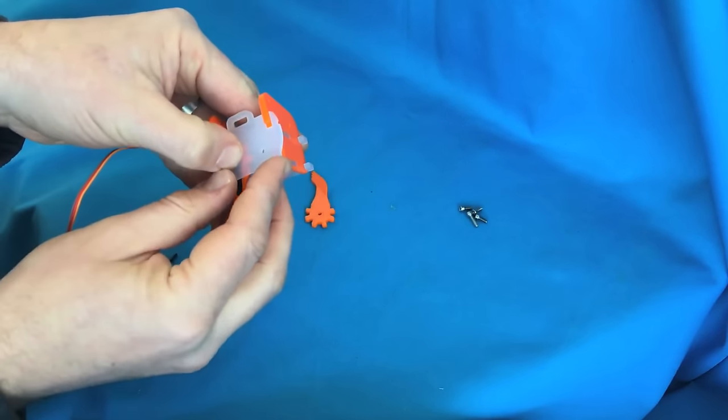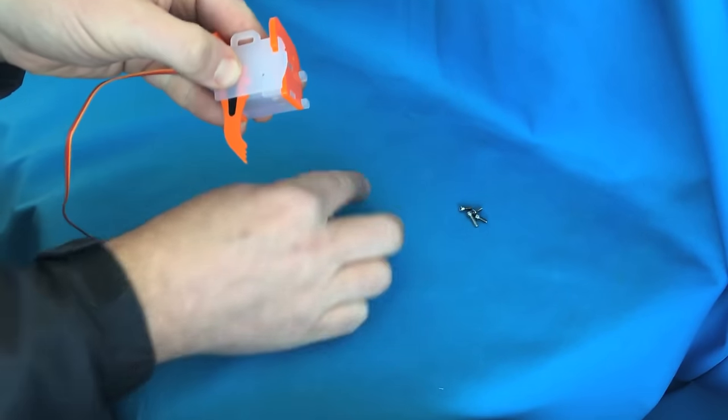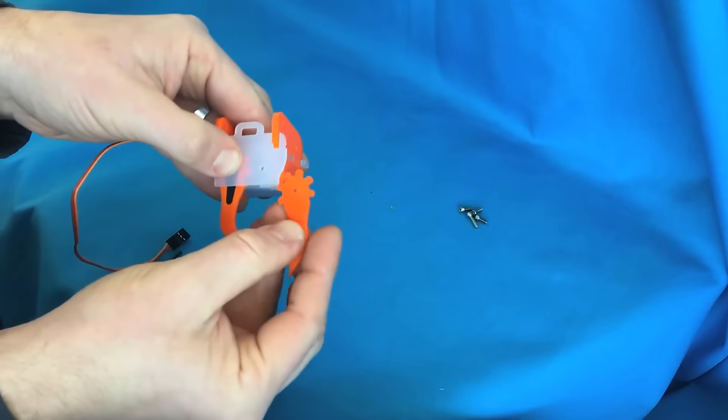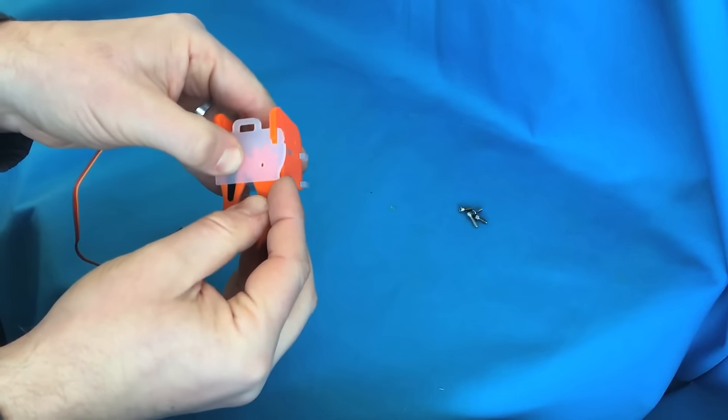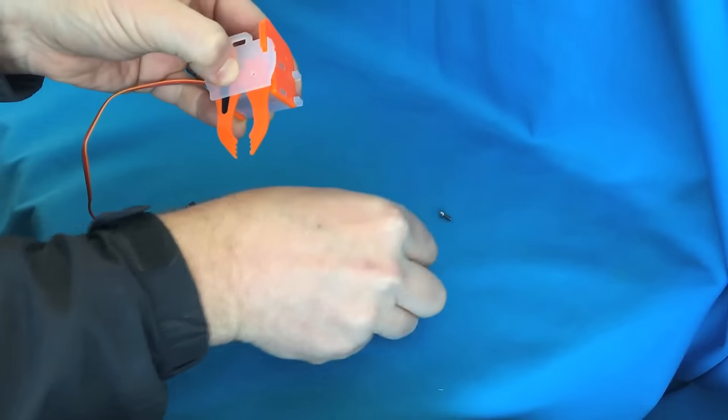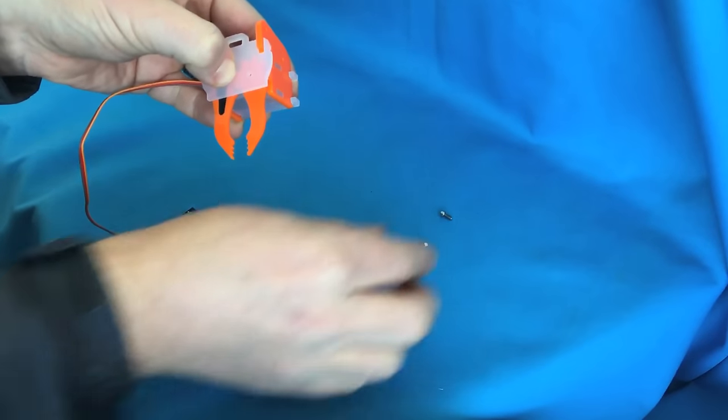Holding it all together, we're going to slot in the second grab under that base plate so it aligns with the first. The hole should align with the hole in the base plate.